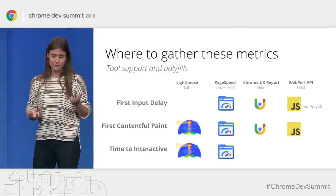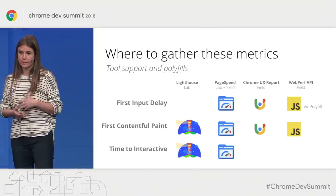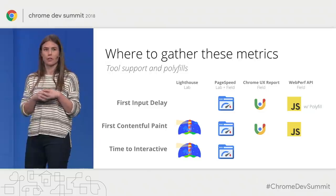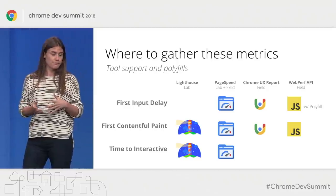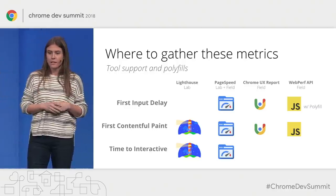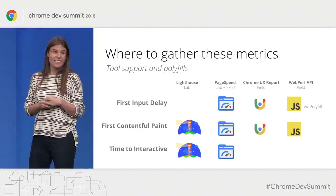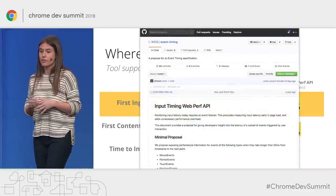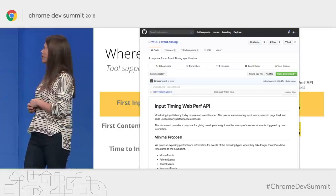All of these metrics are awesome, but where can we actually find them? All three of these metrics are readily available in their respective lab and field environments. Because FCP can be measured in both the lab and in the field with real users, it's available across the board — in Lighthouse, in the Chrome User Experience Report or CrUX, and there's a WebPerf API. TTI is only available in the lab, so it can only be accessed via Lighthouse and PageSpeed Insights. FID requires real user input to measure, so it's available in CrUX, and it's actually going to be coming to Chrome in Q4 or early Q1 as a WebPerf API, so you can view it in a performance observer just as you get FCP today.